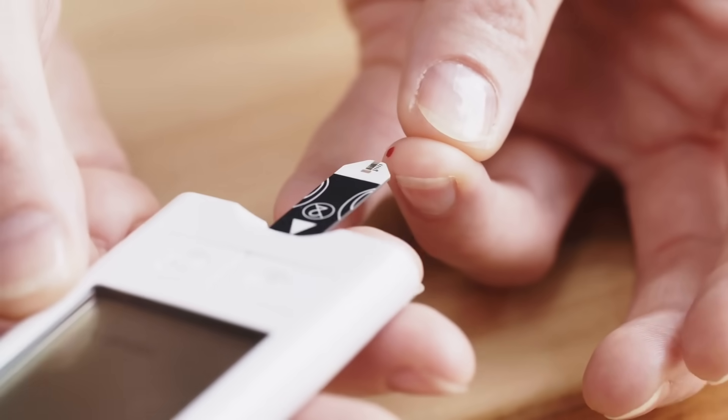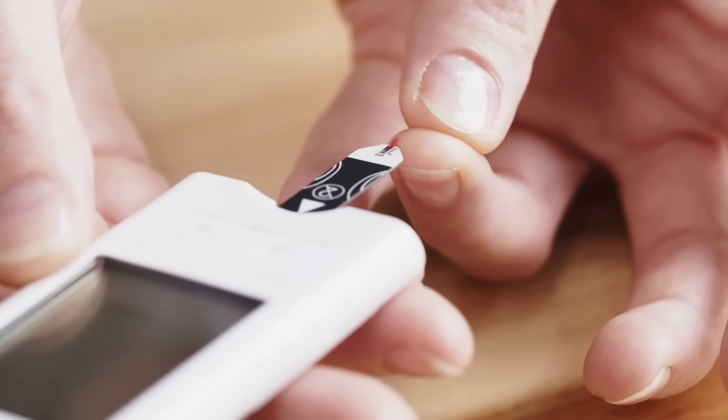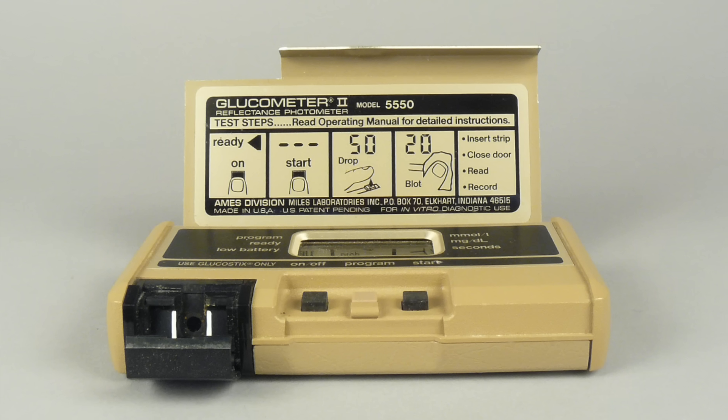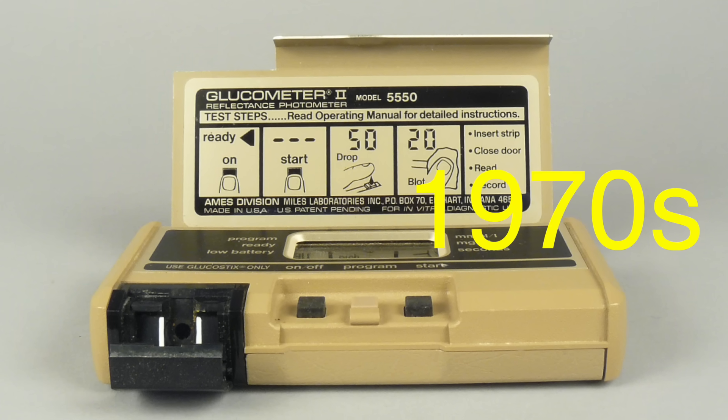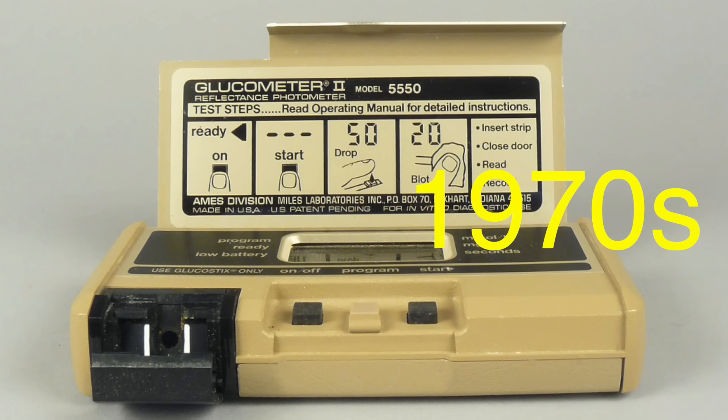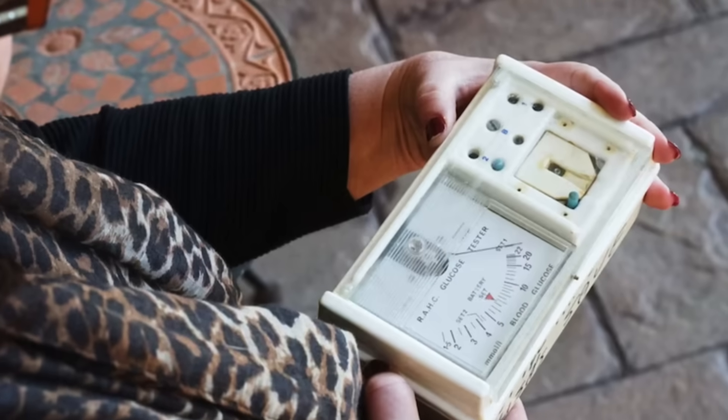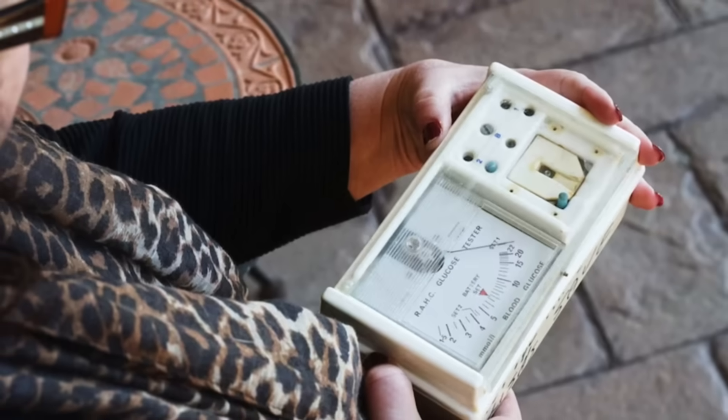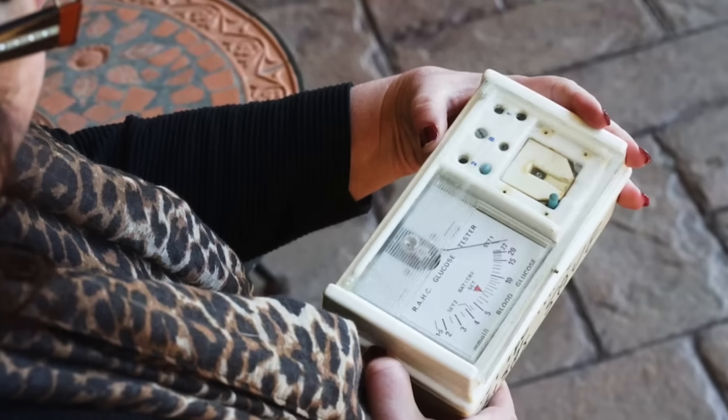Modern glucose meters are the result of decades of innovation. The earliest devices, developed in the 1970s, were bulky and required a lot of blood. They were slow, taking several minutes to provide a reading. Thankfully, technology has come a long way.